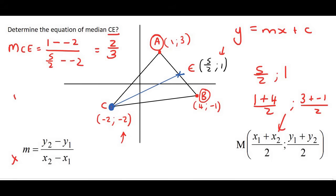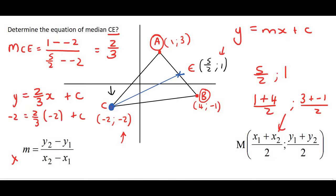So we could fill that into the straight line formula: y = (2/3)x + c. Now to find c you plug in a point on the line. I'm just going to use point C and plug in its x and y as negative 2, and what we would find is that the c value is going to be negative 2/3. So the final answer for the median is going to be y = (2/3)x − 2/3.